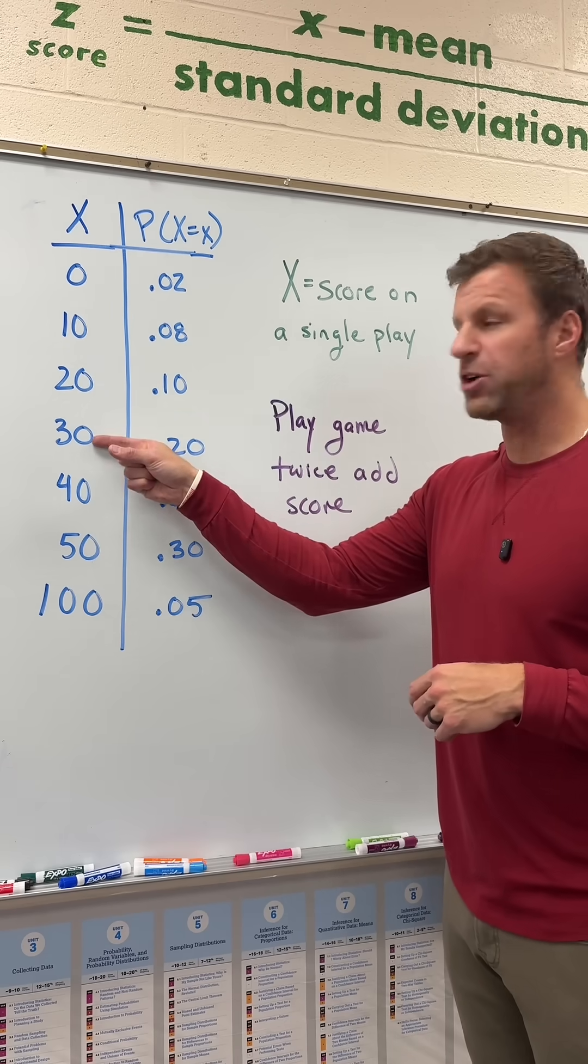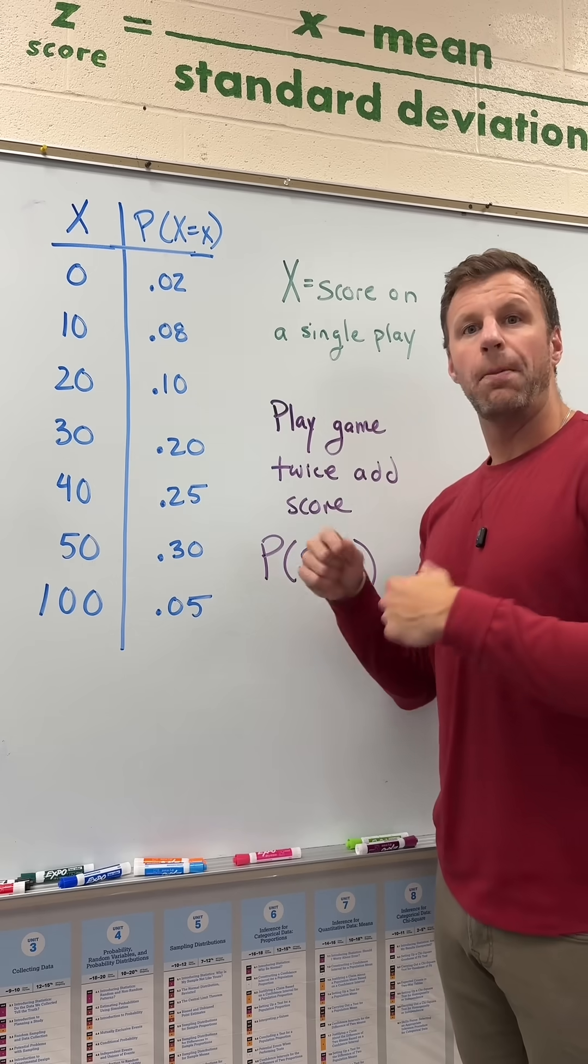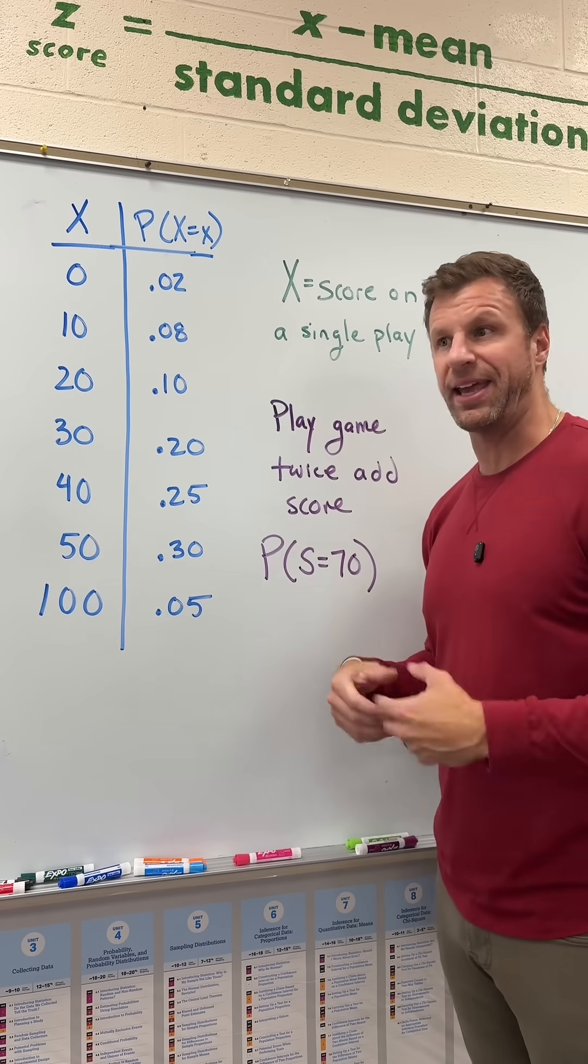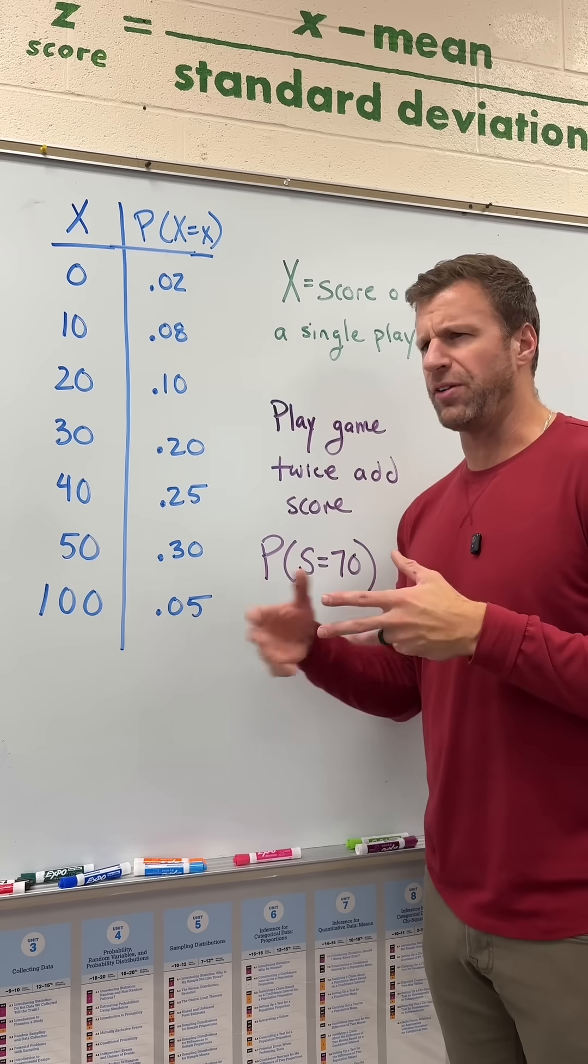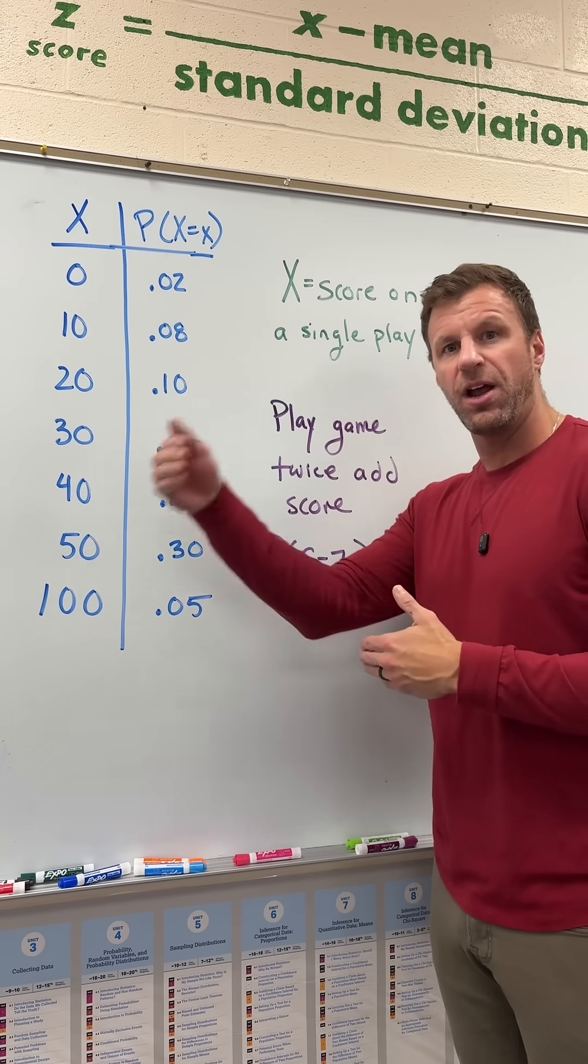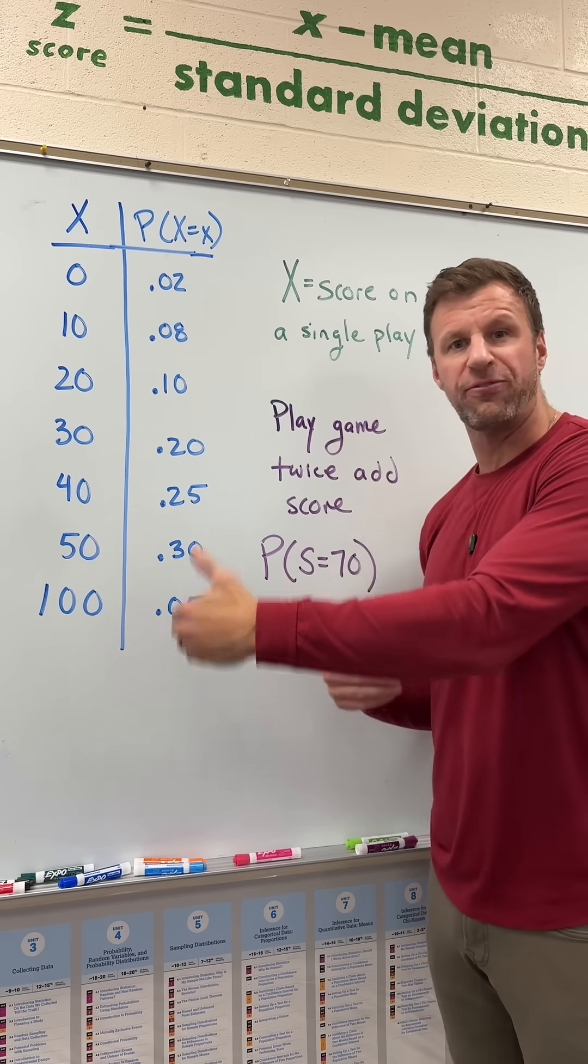For example, we get 30 on the first play and 40 on the second. But we could also get 40 on the first play and 30 on the second. Even though that's still a 30 and a 40 that adds up to 70, those are two distinctly different outcomes: 30 then 40, or 40 then 30.